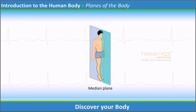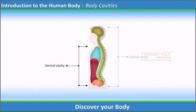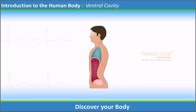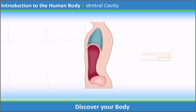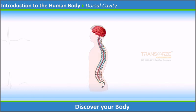Body cavities contain the internal organs or viscera. The two main cavities are the ventral and dorsal cavities. The ventral cavity is the larger of the two and is subdivided into the thoracic and abdominal-pelvic cavities by the diaphragm, a dome-shaped respiratory muscle. The dorsal cavity is smaller than the ventral cavity and contains organs lying more posterior in the body. It is divided into two portions: the upper cranial cavity, which houses the brain, and the lower vertebral canal, which houses the spinal cord.